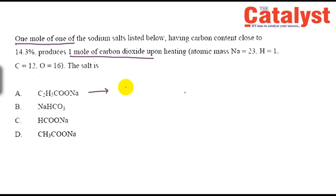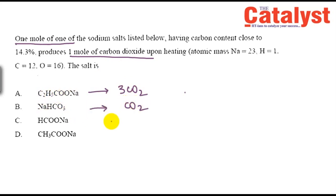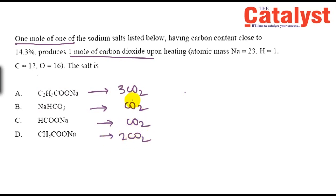If complete combustion occurs, the first compound will give three moles of CO2, because the carbon count is two plus one equals three. Sodium formate will give one mole of CO2, and acetic acid will give two moles of CO2.